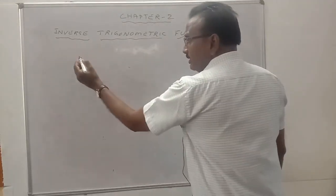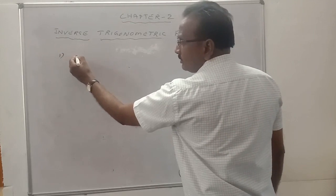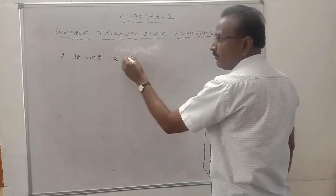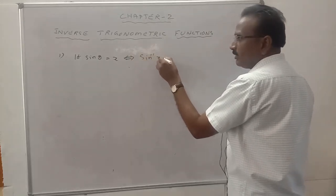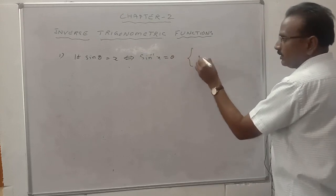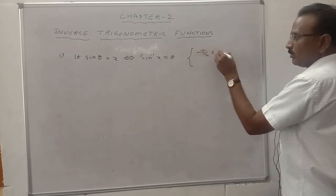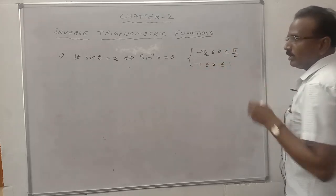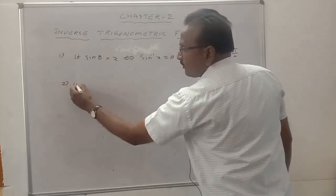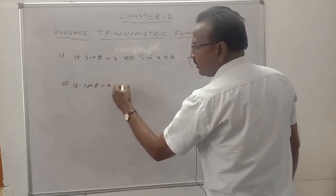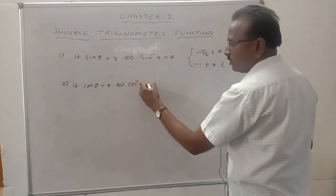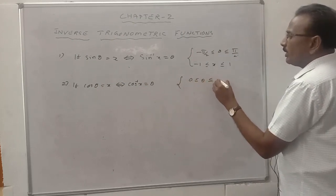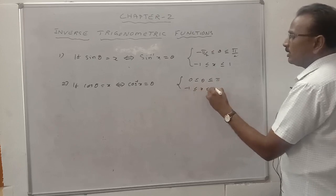To summarize the definitions: sine theta equals x if and only if sine inverse x equals theta, where minus pi by 2 is less than or equal to theta less than or equal to pi by 2, and minus 1 is less than or equal to x less than or equal to 1. Cosine theta equals x if and only if cos inverse x equals theta, where 0 is less than or equal to theta less than or equal to pi, and minus 1 is less than or equal to x less than or equal to 1.